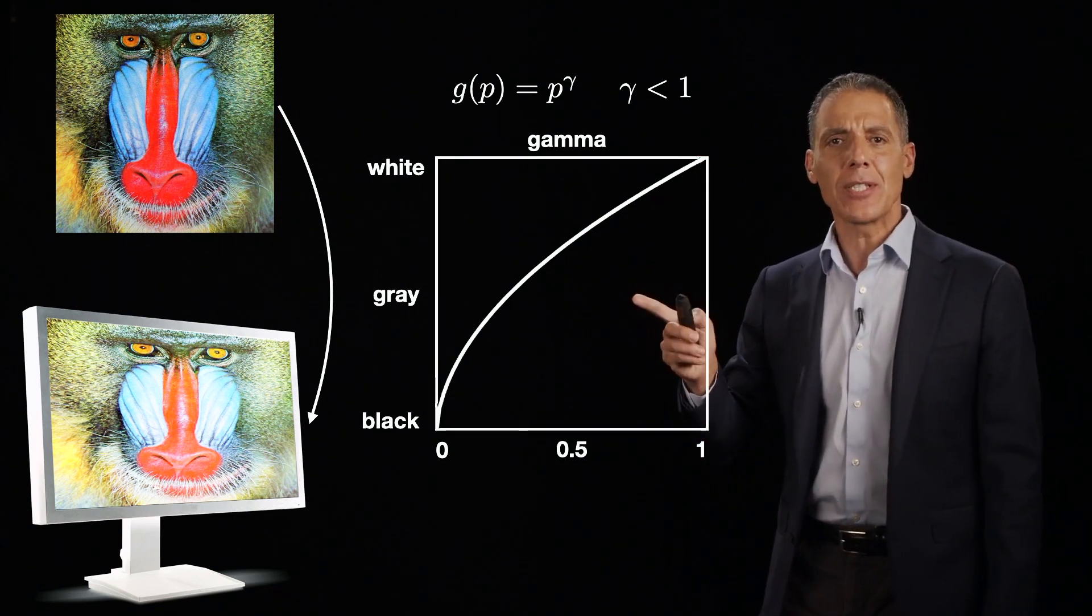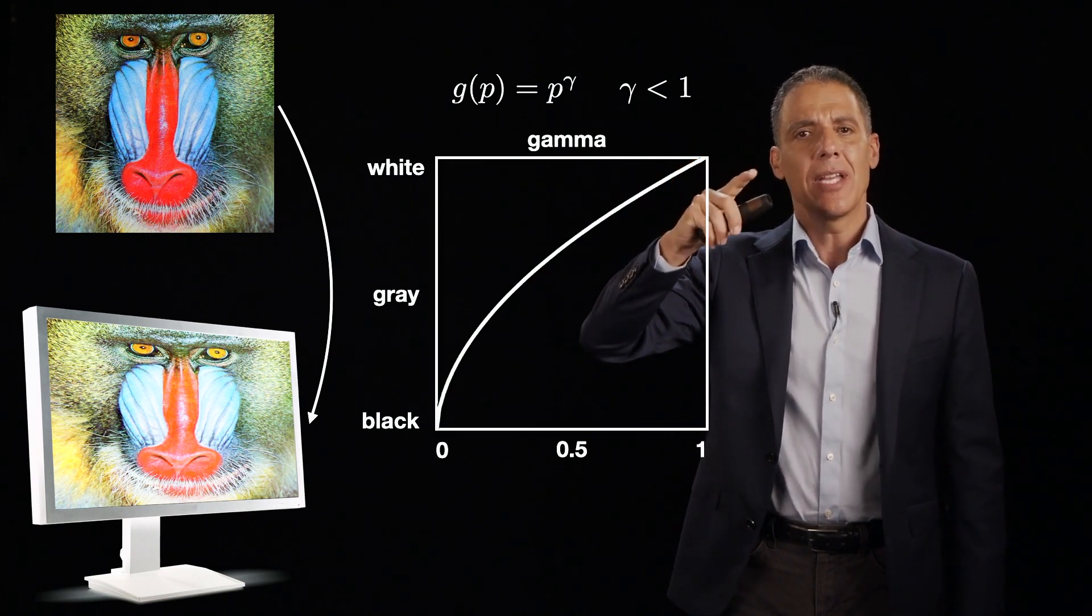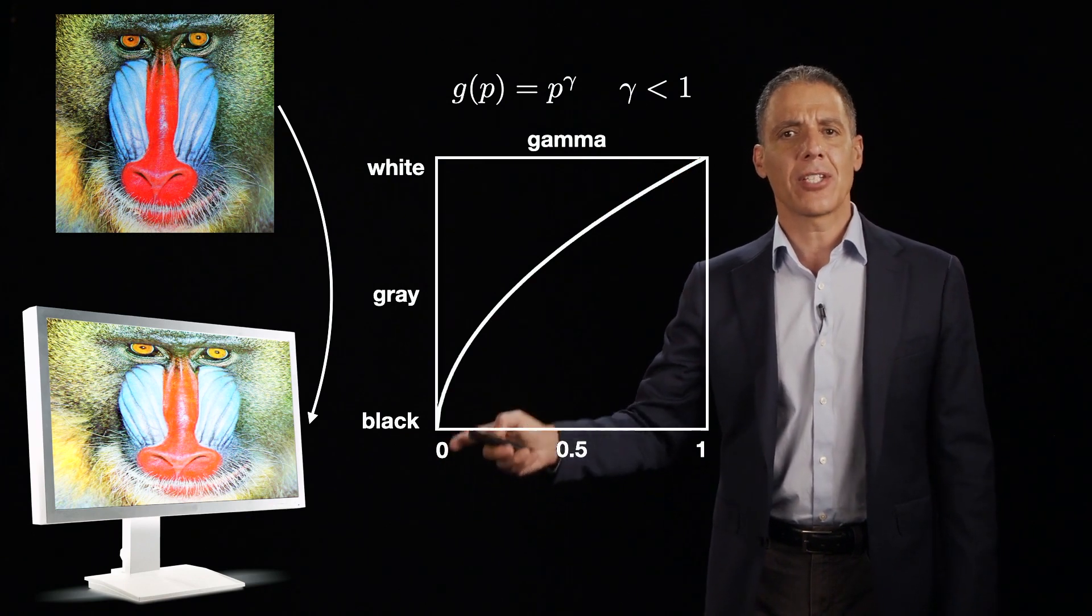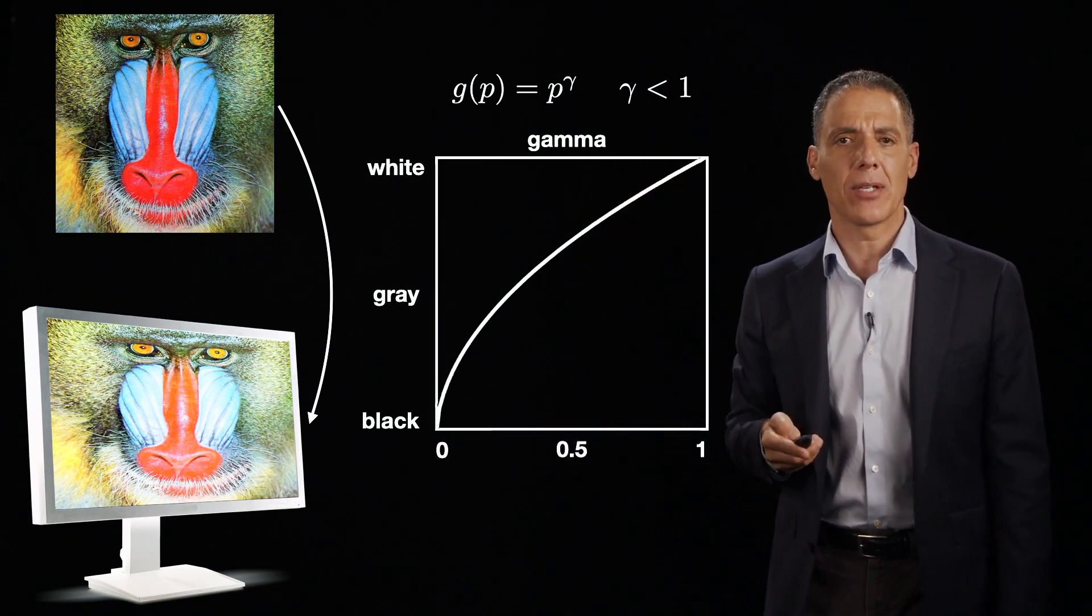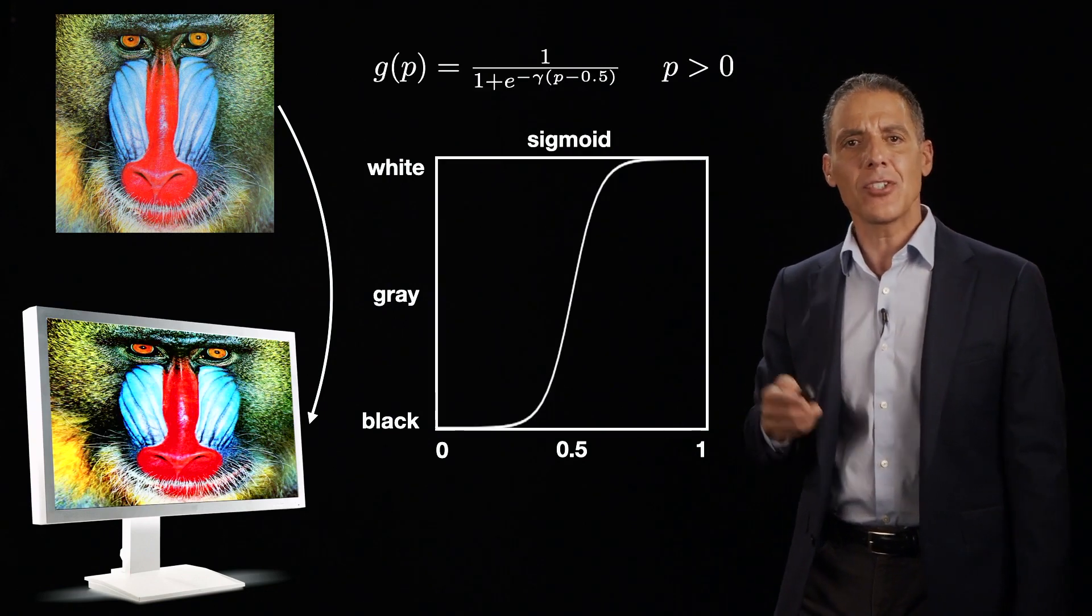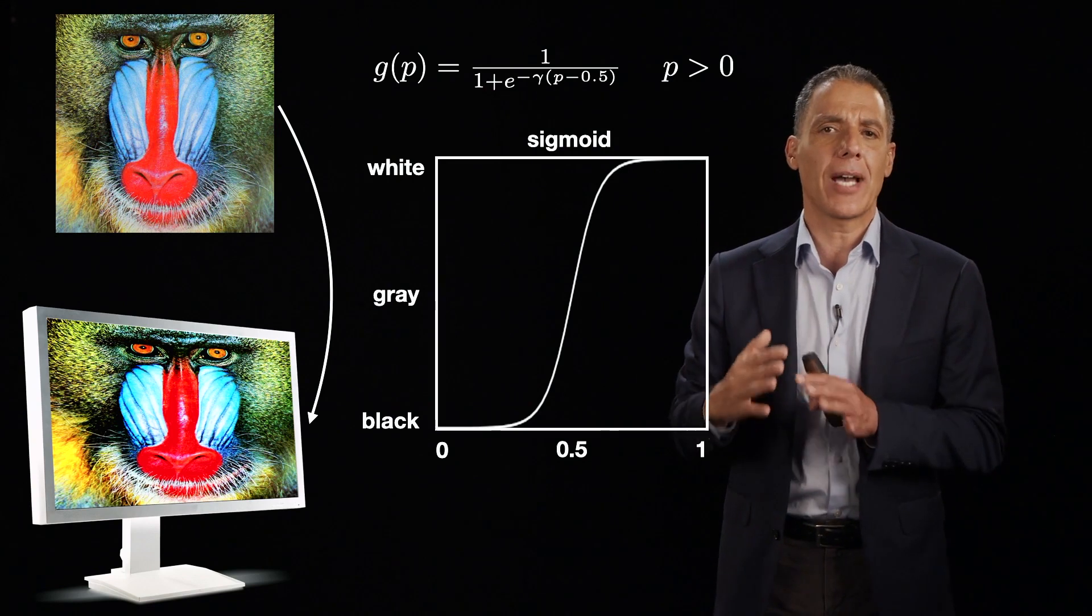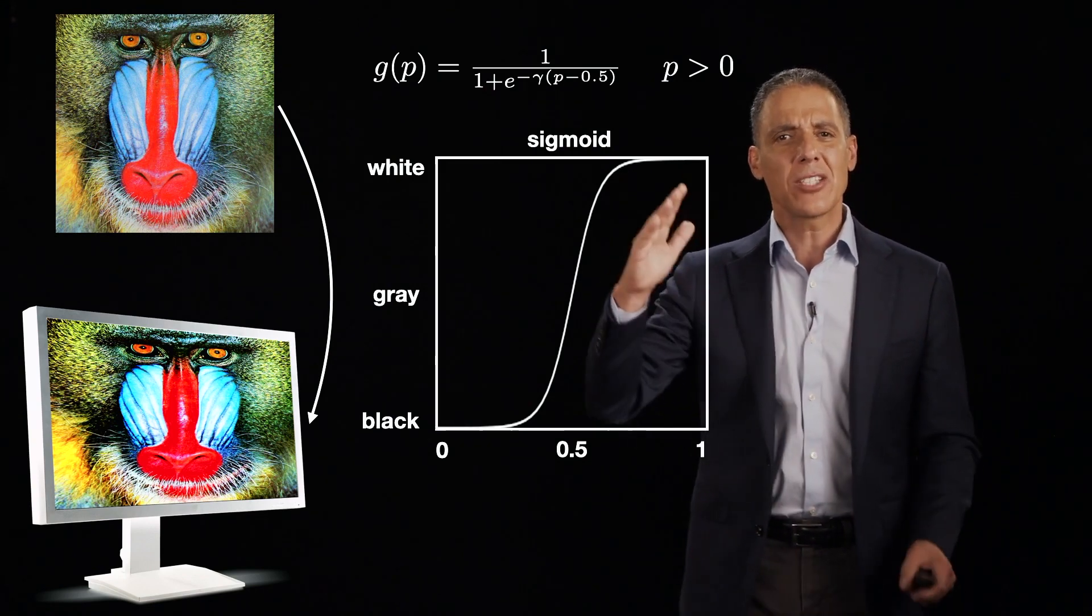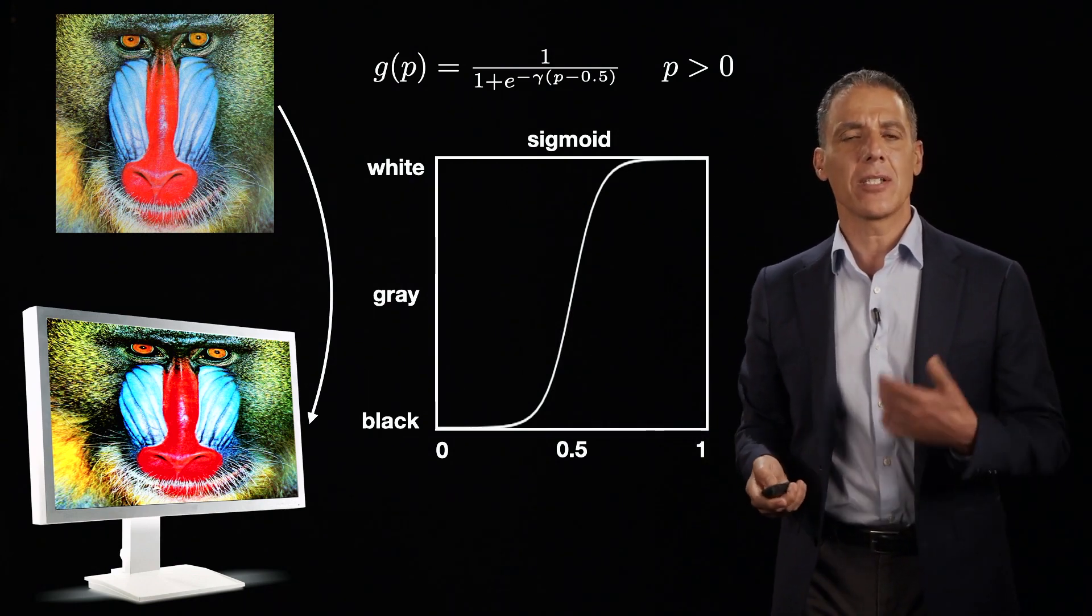Now, one strange thing about the gamma, whether it's a gamma less than 1 or greater than 1, is that it treats the brights and the darks asymmetrically. Here, the darks get expanded more than the brights and vice versa for the gamma greater than 1. And so the sigmoid is a nice compromise here between all of these things. We want to be able to do contrast enhancement, but we don't want to blow out the image. But we'd also like to be able to have symmetry here. And the sigmoid is a really nice non-linearity, although a little bit more involved algebraically.